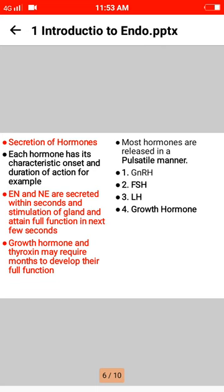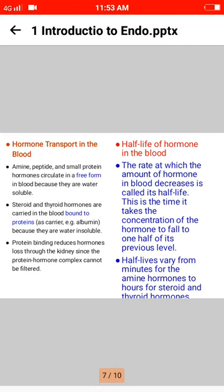Hormone transport in the blood: amines, peptides, and small proteins circulate in free form in the blood because they are water-soluble. Steroids and thyroid hormones are carried in the blood bound to proteins such as the carrier albumin, because they are water-insoluble. Protein binding reduces hormone loss through the kidneys, since the protein-hormone complex cannot be filtered.